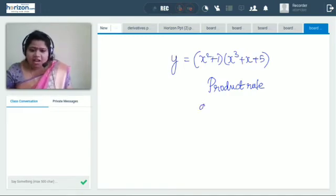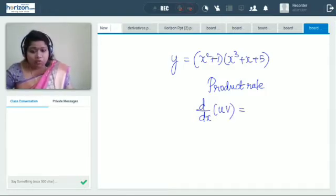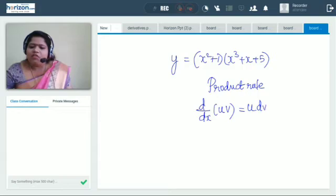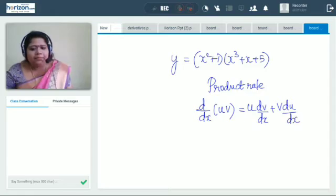It says derivative of two functions, we are going to write that as u and v. So it says that we have to write the first term as it is times the derivative of the second term plus second term we will be writing as it is times the derivative of the first term. So this rule we are going to apply in this problem.